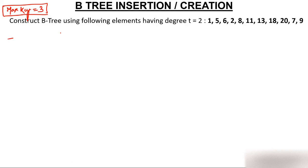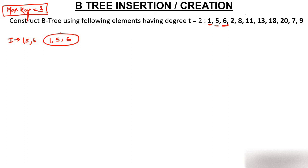Let's start inserting. First, insert 1 — create a node and insert 1. Then insert 5 — written and inserted, no issue. Then insert 6 — insert 6 in the node, no issue. We have now inserted 3 elements: 1, 5, and 6.